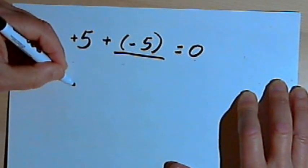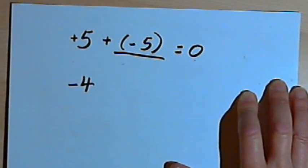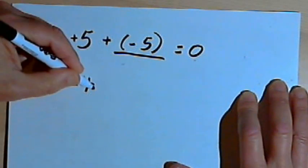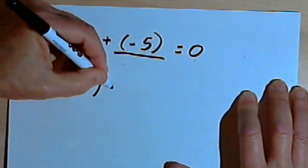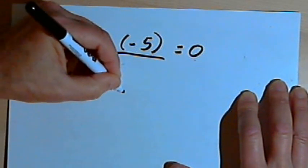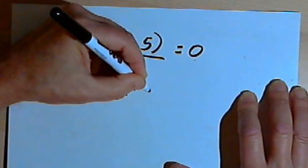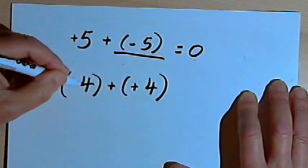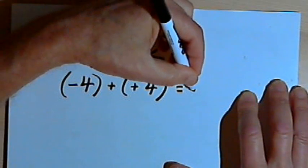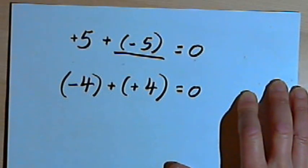If you start with a negative number, for instance, if you start with a negative number, I would take the opposite of that negative 4, which is a positive 4. When I add negative 4 and positive 4 together, I get zero.